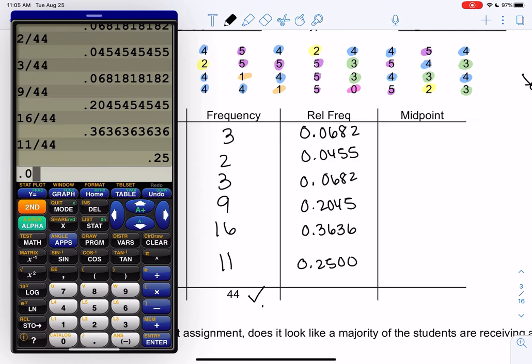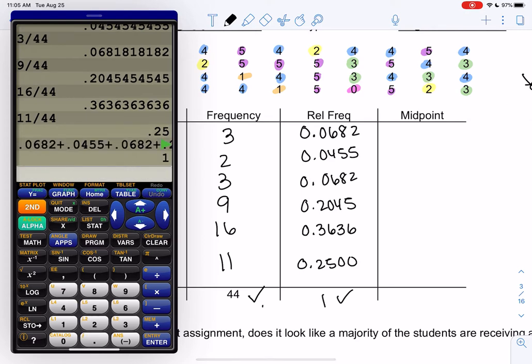Next one is 0.3636, 16 out of 44. And the final one is 11 out of 44, which is 0.25. And I'm just going to add two zeros to be consistent. And let's just check. Make sure they add up to 1 or very, very close to 1. So these are just good ways to check our work. Perfect. It's exactly 1. Again, it might be slightly under, slightly over from rounding, but very, very close.